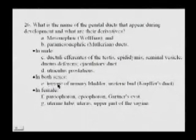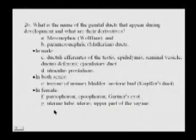The genital ducts that appear during development are the mesonephric (Wolffian) and paramesonephric (Müllerian) ducts. In the male, derivatives include the ductuli efferentes of the testis, the epididymis, the seminal vesicle, the ductus deferens, and the ejaculatory duct. In both sexes, the trigone of the urinary bladder and the ureteric bud (Kupffer's duct) are derived. In the female, derivatives from the mesonephric duct include the epoophoron, paroophoron, and Gartner's duct cysts; from the Müllerian ducts come the uterine tube, uterus, and upper part of the vagina.